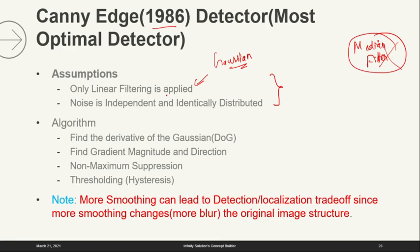Coming back to the point: only linear filtering is applied, and the other assumption is that the noise in the image should be i.i.d. — independent and identically distributed. This is a fairly good assumption because in mathematics and noise modeling, especially with a communications background, noise is always assumed to be i.i.d. for computational ease. There are separate lectures for that. If you want, just comment and I can make one.